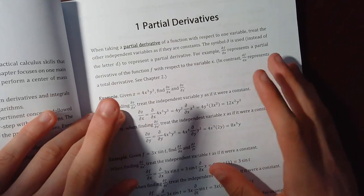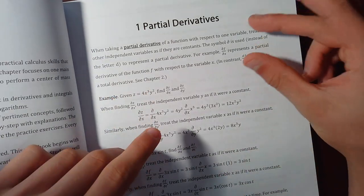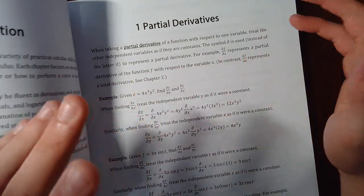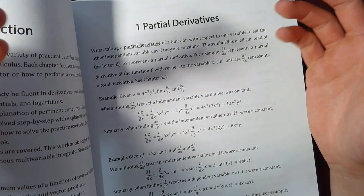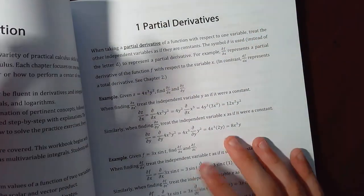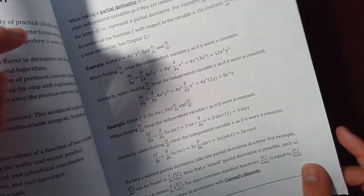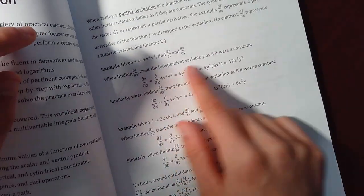So basically, it just starts off with what a partial derivative is. It gives you a little summary, but it doesn't go in huge depth. If you want to know what it is, I'd research a video or go on a different book. But it basically shows you how to work one out. You just treat the other variable as if it were a constant. So it goes through that.